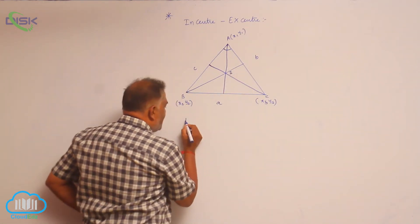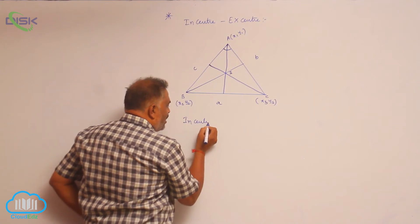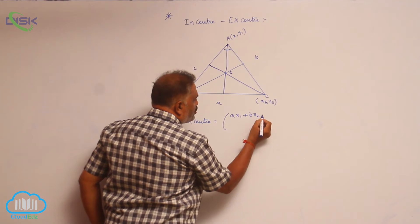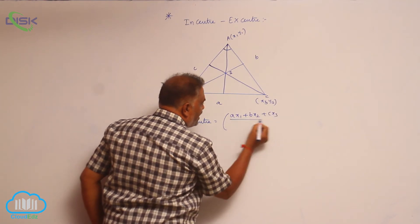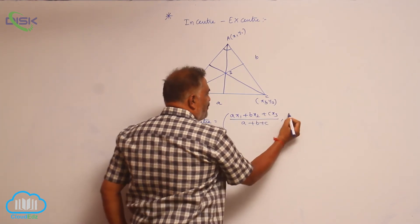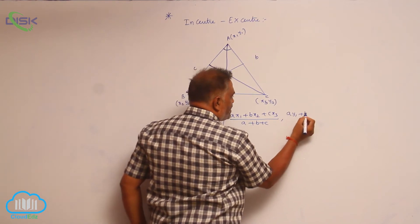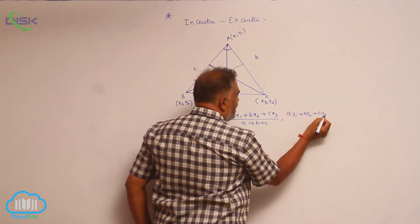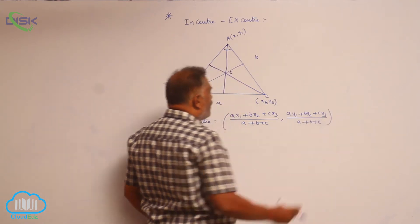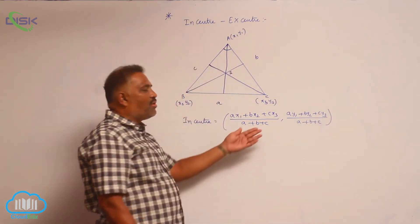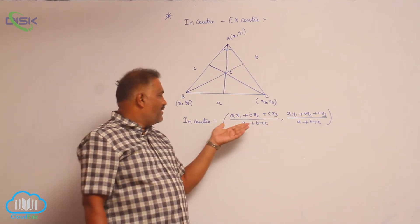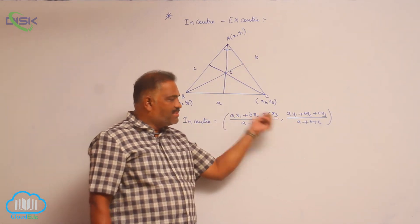The incenter is given by the formula: I = ( (a·x1 + b·x2 + c·x3) / (a + b + c), (a·y1 + b·y2 + c·y3) / (a + b + c) ). You will come to know how to get these coordinates in vector algebra — the derivation of the incenter follows that model.